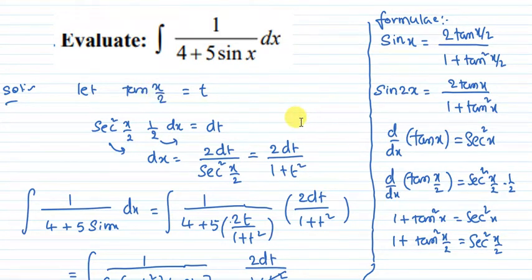Now for the derivative: tan x by 2's derivative is sec square x by 2 times 1 by 2. So sec square x by 2 times 1 by 2 dx equals dt. Therefore, dx equals 2dt by sec square x by 2, which equals 2dt by 1 plus t square.